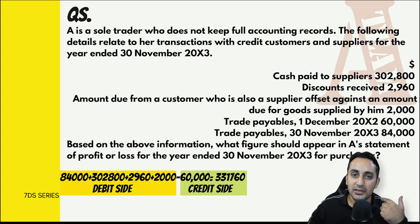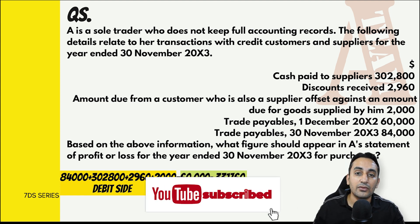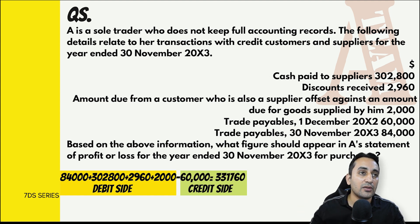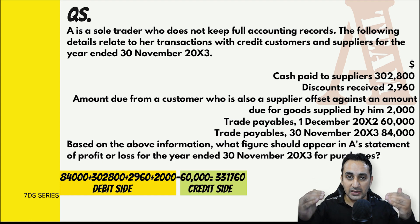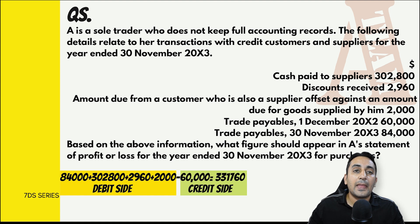पहले plus और minus से solve करके बताता हूँ, फिर ledger में कौन सी item debit side और कौन सी credit side आएगी वो भी देखेंगे। Cash paid to supplier की वज़ह से payable कम होता है। Supplier discount देता है तो भी payable कम होता है। एक party है जो customer भी है और supplier भी - उसे offset कर रहे हैं। Traders के opening और closing balances भी दे रखे हैं।